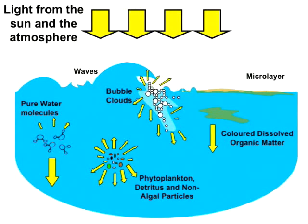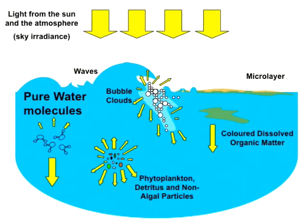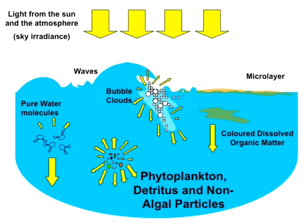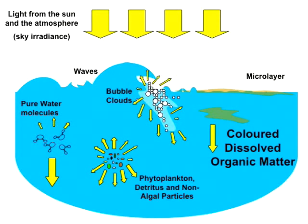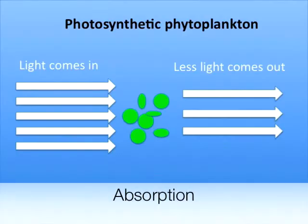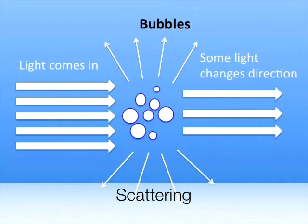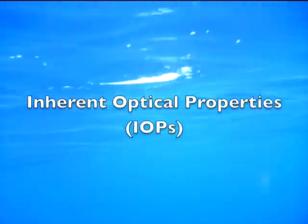Once light from the sun and atmosphere enters the water, its apparent intensity and colour is influenced by the pure water itself and a variety of optically active constituents within. Constituents include photosynthetic phytoplankton, detritus, non-algal particulates, bubbles, and colour-dissolved organic matter. Some constituents, such as phytoplankton, tend to readily absorb light, converting it into other forms of energy. Others, such as bubbles or non-algal particulates, tend to scatter light, redirecting it. Every water constituent has unique absorbing and scattering properties, referred to as inherent optical properties.